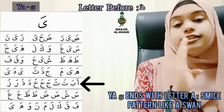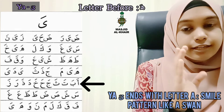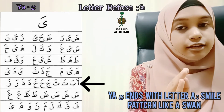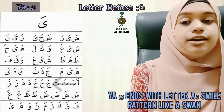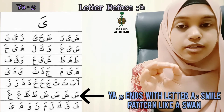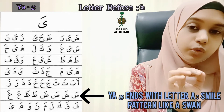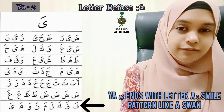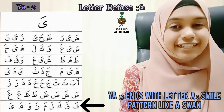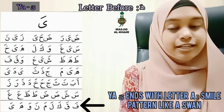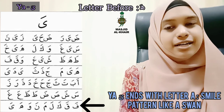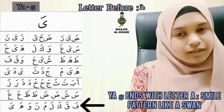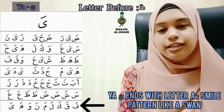Okay, from your A till your YAH: A, Ba-ta-tha, Ja-ha-ho, Da-tha, Ro-za, Sa-sh, So-do, To-zo, A-go, Fa-qo, Ka-la, Ma-na, Wa, Ha, Ya. Alright, so you are done with Alif, which is your A, all the way till your YAH.